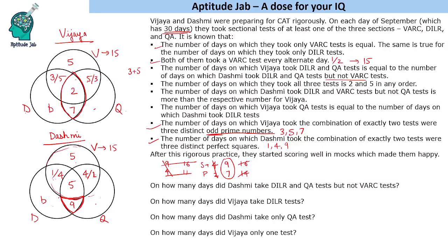Using the inequality clue — Dashmi's DILR-and-VARC-not-QA value is more than Vijaya's corresponding value — and the available pairs (1 or 4) and (3 or 5): Dashmi's value must be 4 and Vijaya's must be 3. As a result, the remaining paired region gives 5 for Dashmi and 1 for Vijaya.